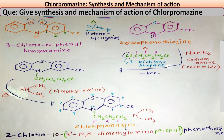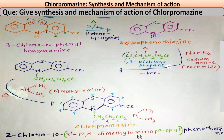The heterocyclic ring present in chlorpromazine is phenothiazine. For numbering: carbon is given the first number, then second, third, fourth; sulfur is on the fifth position, then sixth, seventh, eighth, ninth; and nitrogen is on the tenth position. The chloro group is present on the second position, so we write 2-chloro. On the tenth position, counting one, two, three, a propyl group is present, so we write 10-propyl.